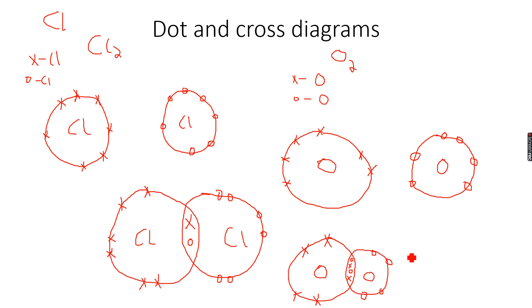So now this is basically how we make dot and cross diagrams for covalent compounds. Now we can also represent them like Cl-Cl, because this single line represents a single bond. We can represent this as O=O because these two lines represent a double bond.